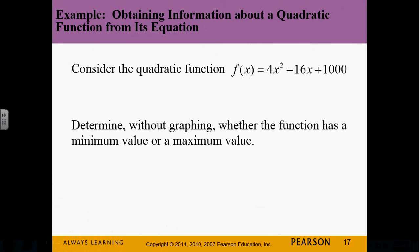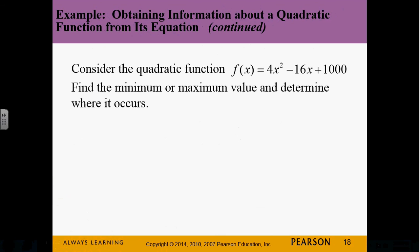Looking at the equation 4x² - 16x + 1000: does it have a maximum or a minimum? It has a minimum — because a is positive, it opens up and therefore has a minimum. If I know nothing else, I know it's opening up and therefore has a minimum. But I should be able to solve for that value because I can find the vertex.